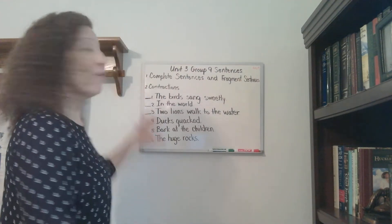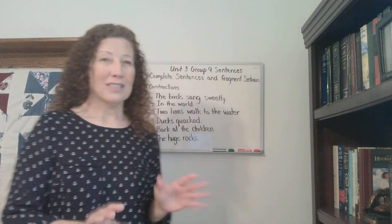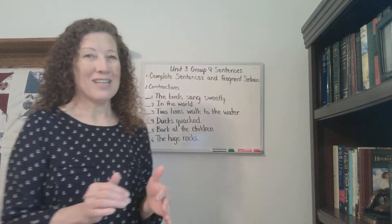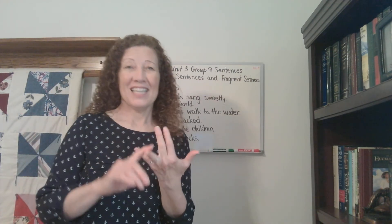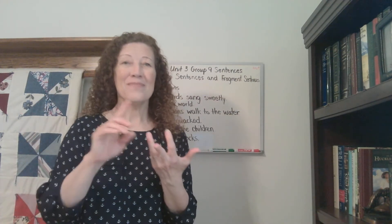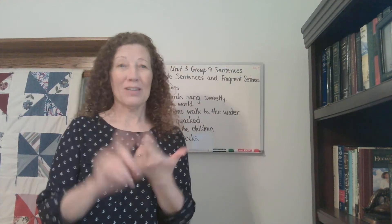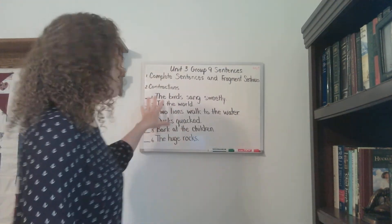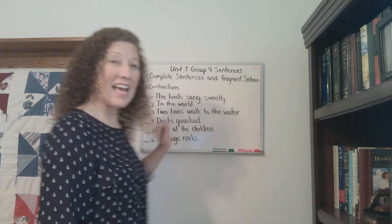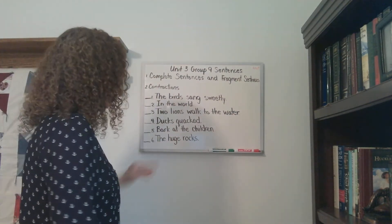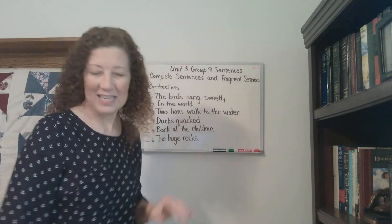If we think about what the parts of a sentence are from our little jingle that we do, it is a subject, it is a verb, it makes complete sense, it has a capital letter, and it has an end mark. Let's look at our sentences here and see if we can figure out which ones are complete sentences and which ones are just part of a sentence.